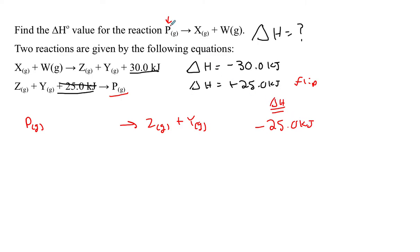That takes care of P, and I did not get any X or W along with it. Next I'll move on and look for an equation that has X in it, and I will modify it to be a product. I find X in the first equation, but it's on the wrong side, so I'm going to have to flip the first equation.